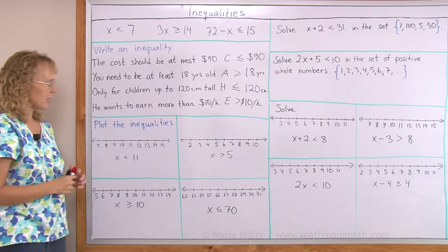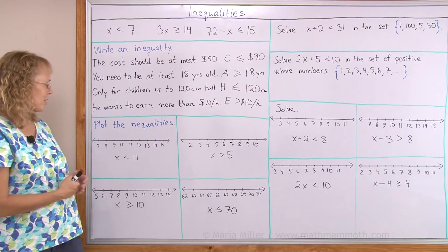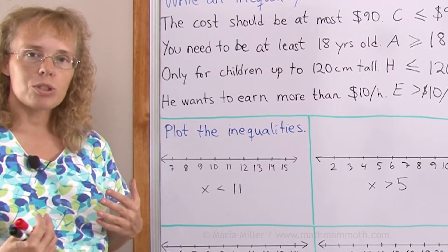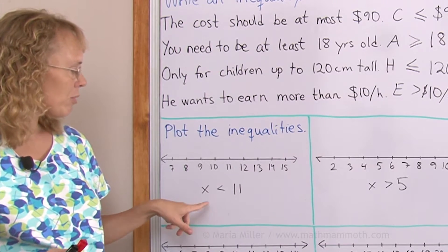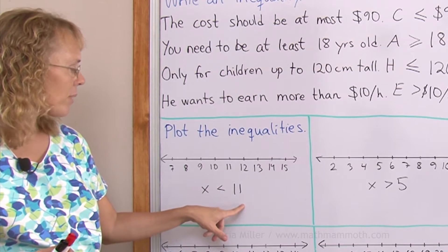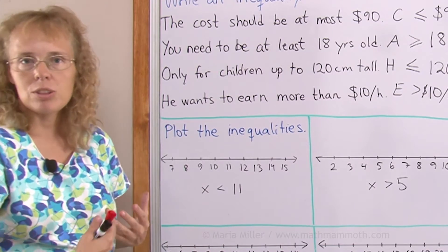Plus the inequalities. And that's basically the same as solving them. We will also solve them at the same time. x less than 7. Notice that this has many solutions. For example 5. If I put 5 here it is a true inequality because 5 is less than 7. Also 7 would work, and 0.